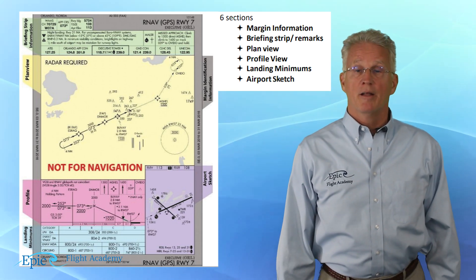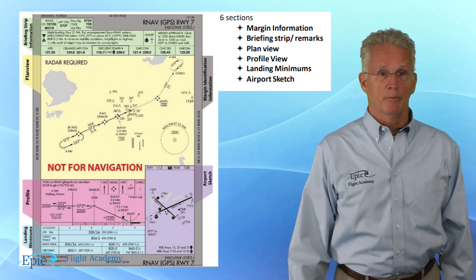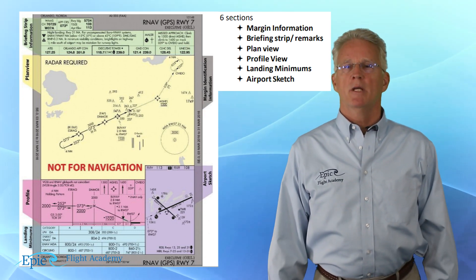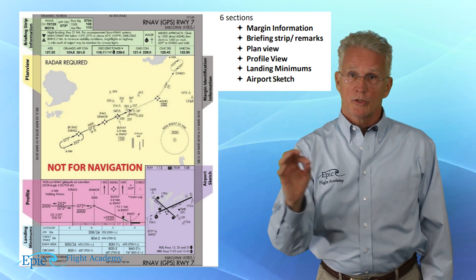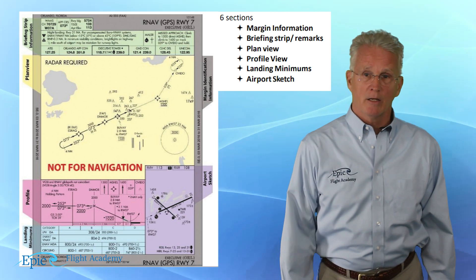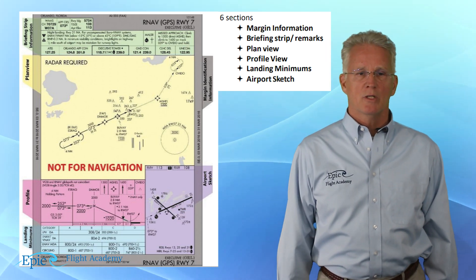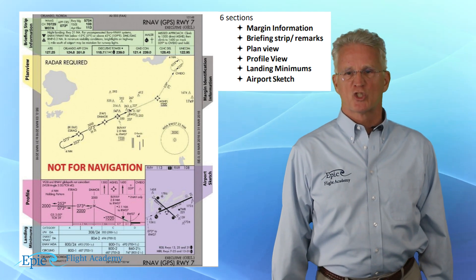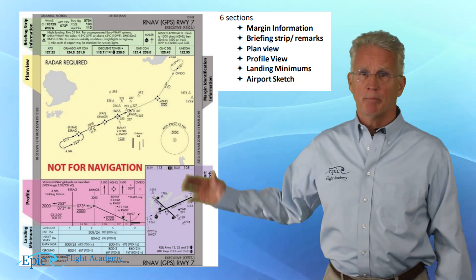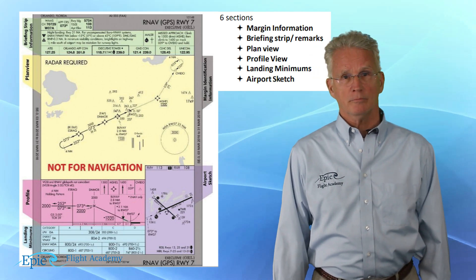And then fifth, on the bottom of the chart, you can see that in light blue, this is the landing minimums section, which we'll talk about in more detail in one moment. Finally, in the lower right-hand corner of the plate, you see an airport sketch. On our sample, we've shown that here in light purple.